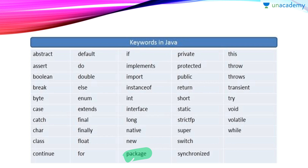There is a keyword named strictfp. Strictfp is used with a variable so that whenever we apply any operation on that variable, the result will be the same across different platforms — whether Windows, Linux, Ubuntu, or Unix. Now synchronized is basically used for synchronization between threads. If there is a shared resource for two threads, they both can't access it simultaneously; the first thread accesses the resource, then after it finishes, the second thread accesses it.